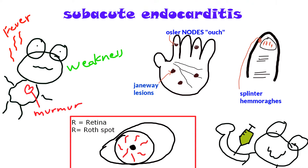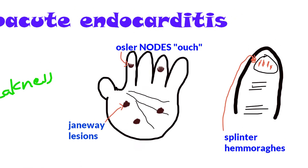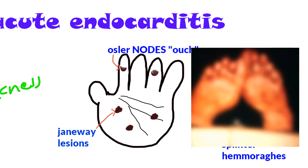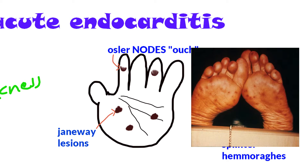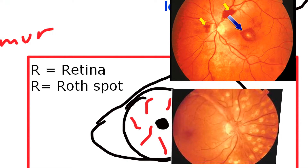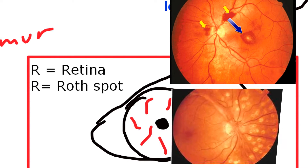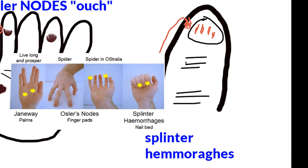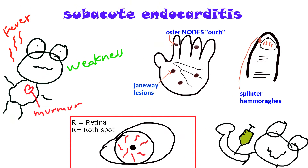On physical exam, check the hands, feet, and eyes. You might see Osler nodes — small, painful nodules on the fingers or toes. There may also be Janeway lesions, which are non-tender dark spots on the palms. Check the retina for Roth spots, which are essentially retinal hemorrhages seen on fundoscopic exam. Also check nail beds for splinter hemorrhages. These findings come from micro-embolization of vegetations, which can cause ischemia and pain anywhere in the body, and patients are also at risk for stroke.